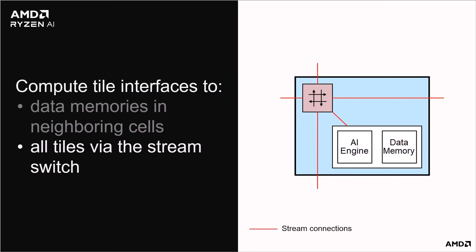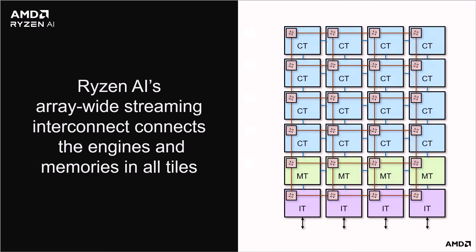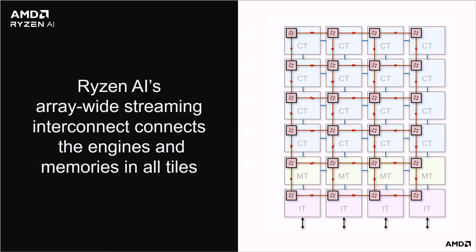A streaming network runs throughout the array. Every tile has an interconnect switch to connect to this network. The compute tile has four data movers connected to the stream switch, two inputs and two outputs. Data can be sent long distances around the array using this network. Note that there is no cache in the compute tiles or anywhere else in the array. Data movement is optimized and sent only to where it is needed.